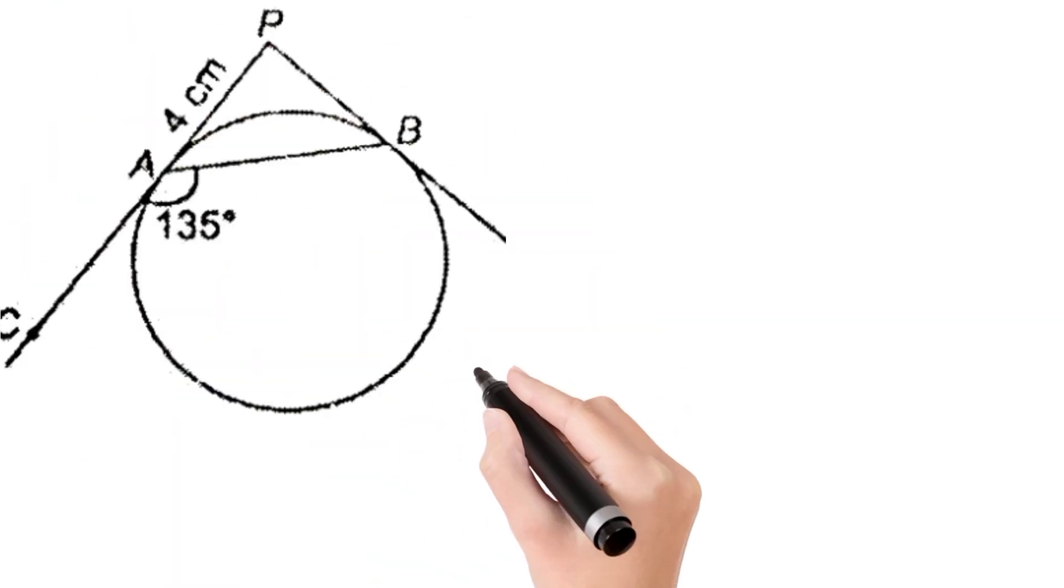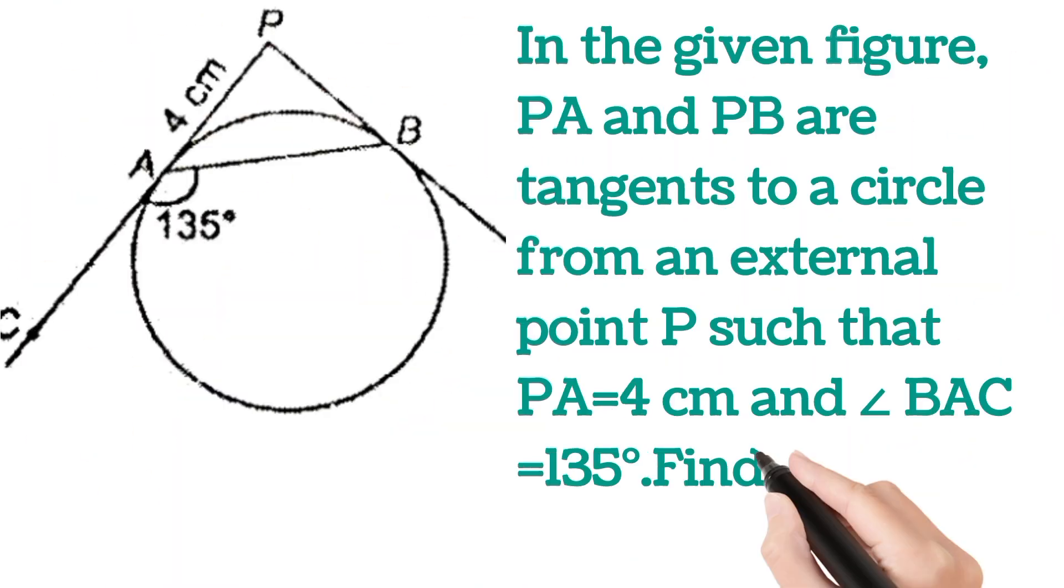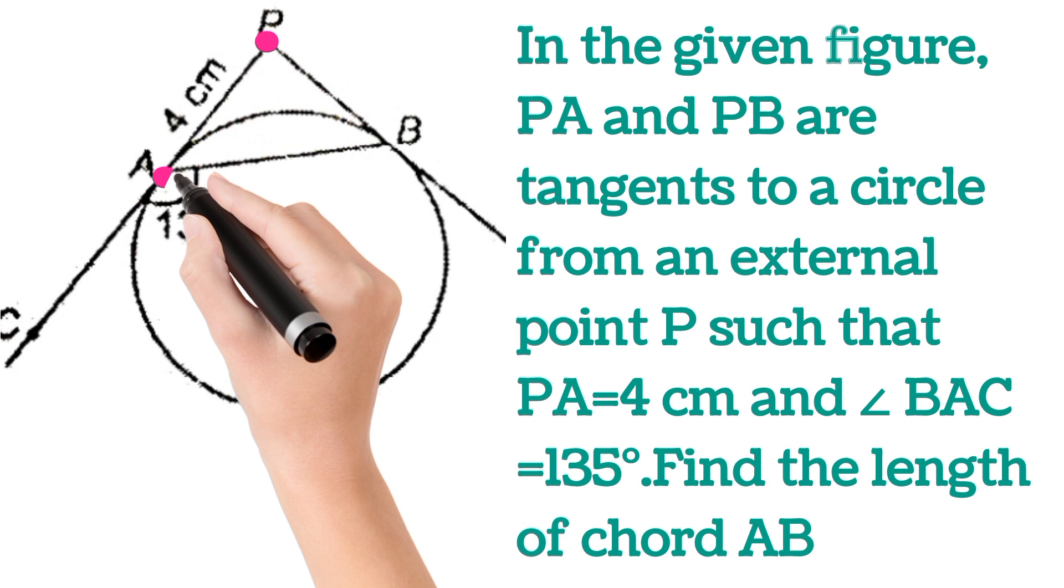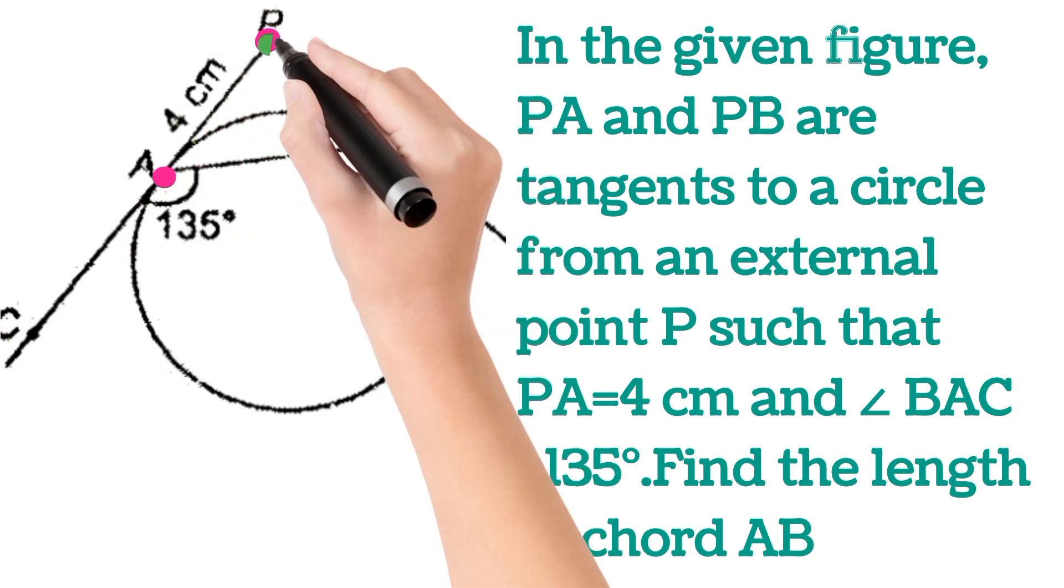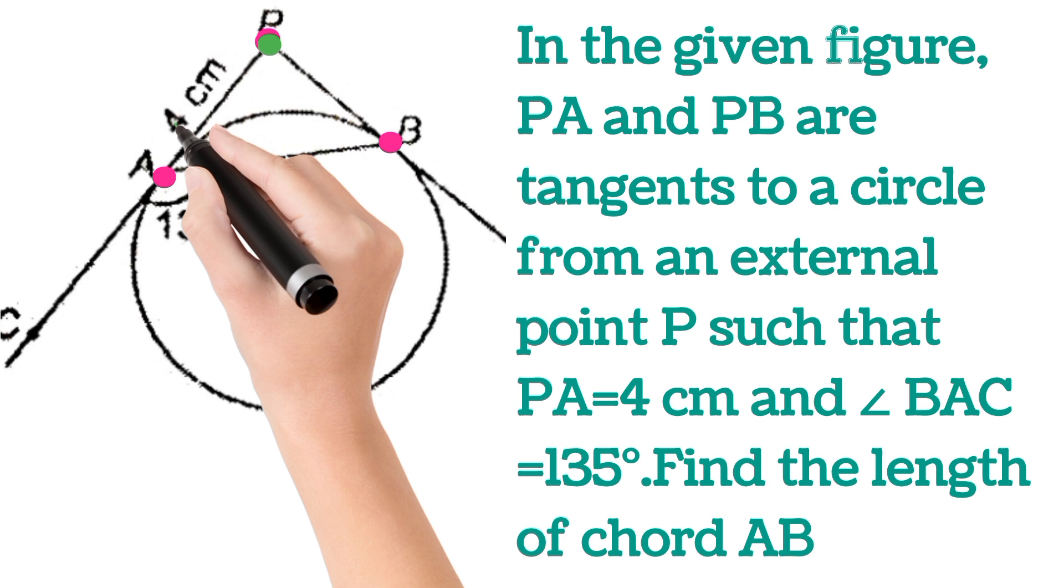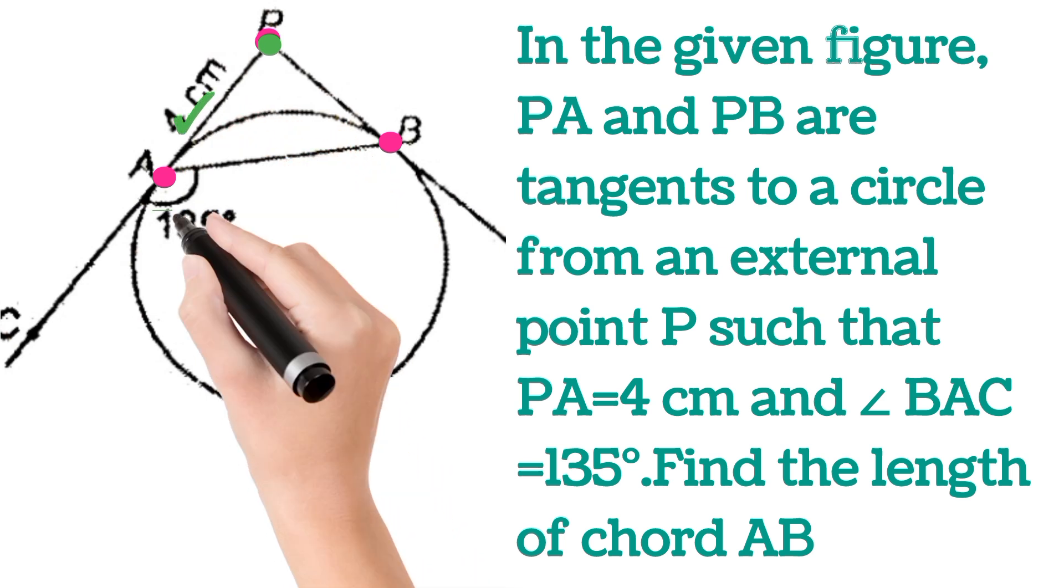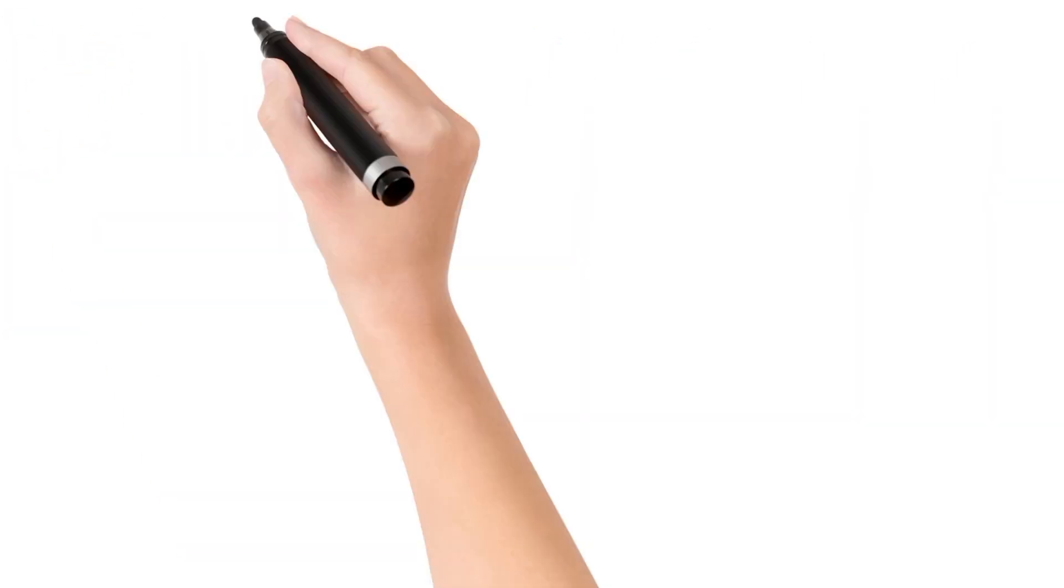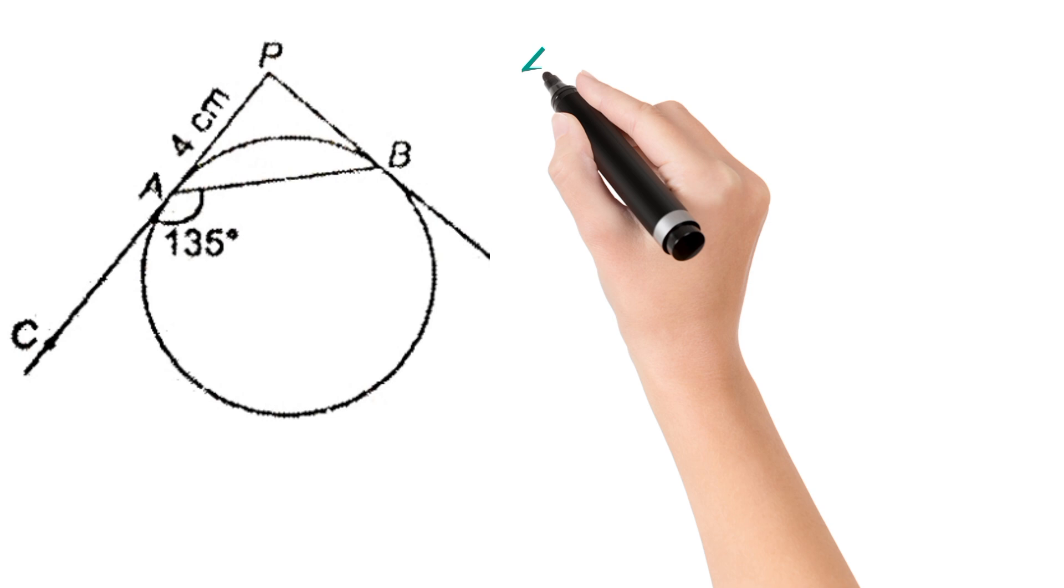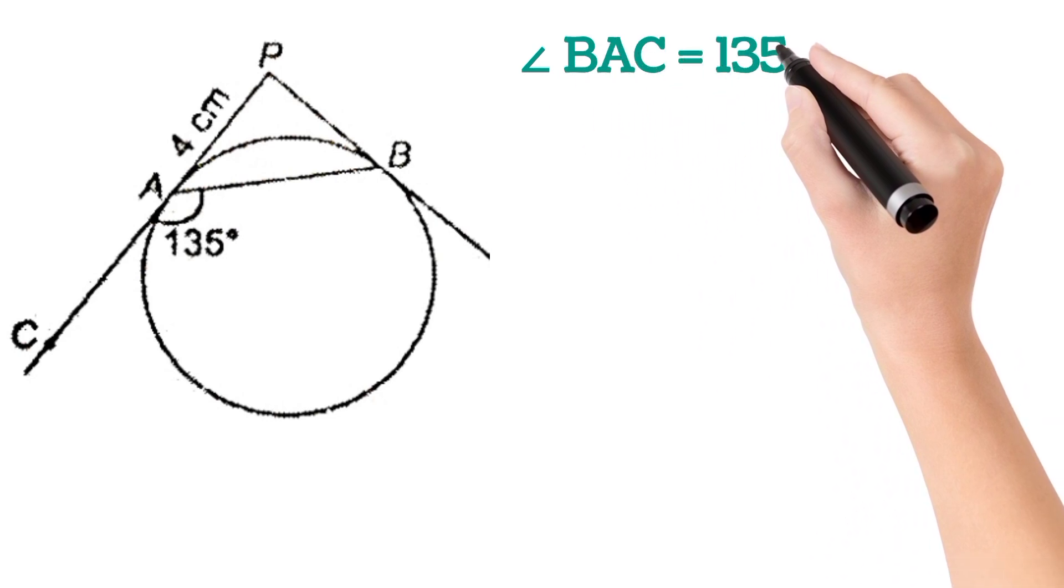Hello everyone, welcome back. Today I have taken a very interesting question in which PA and PB are tangent to the circle from an external point P such that PA is 4 centimeters and angle BAC is 135 degrees. Then we have to find out the length of chord AB. This is the figure and angle BAC is given 135 degrees.